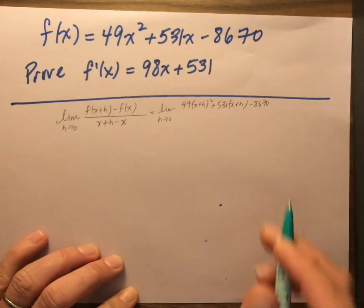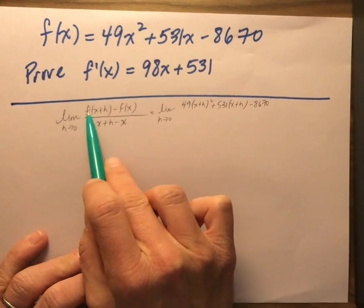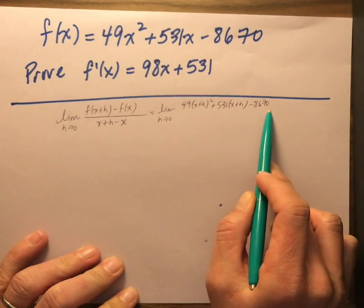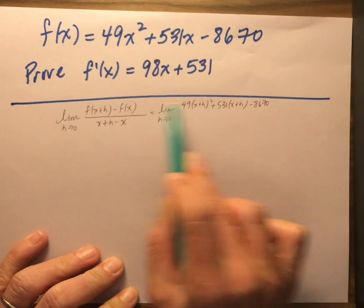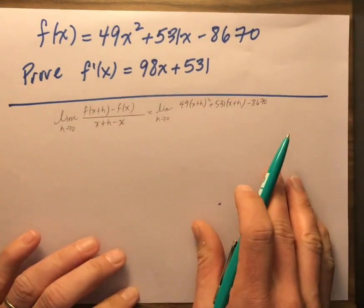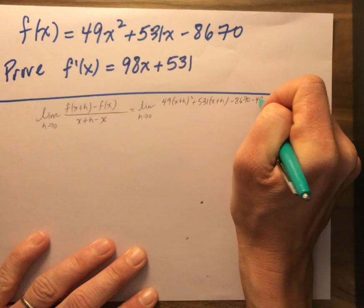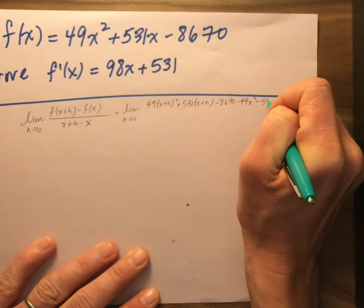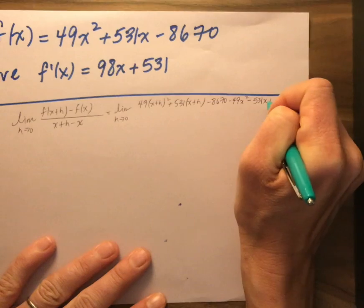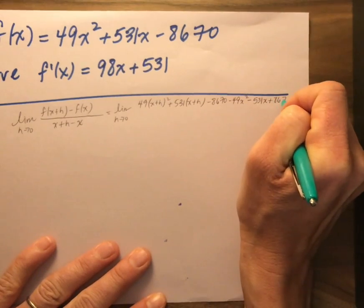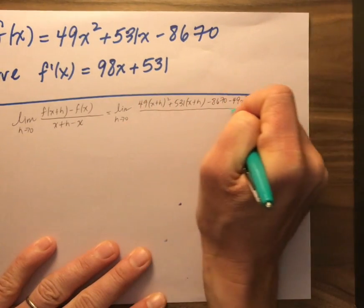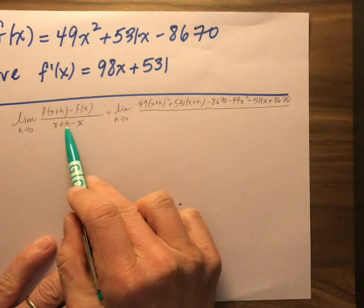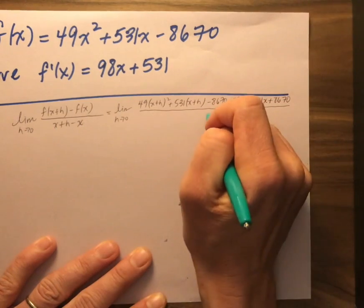And I am going to subtract the f of x. So I just plugged in the x plus h into f of x. And I'm going to subtract f of x. So at this point, I'm going to say minus 49x squared minus 531x plus 8670. And this is all over x plus h minus x. So this is all over an h.